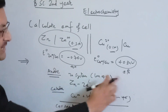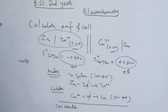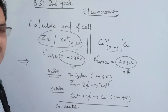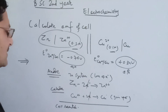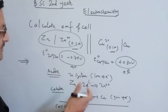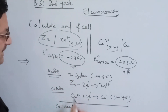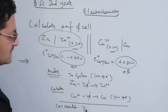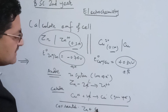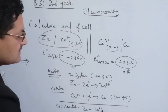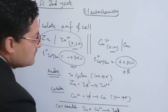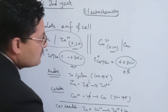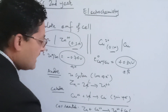We multiply and balance so that the loss of electrons equals the gain of electrons. The overall cell reaction is: Zn + Cu²⁺ → Zn²⁺ + Cu. This is the balanced cell reaction.